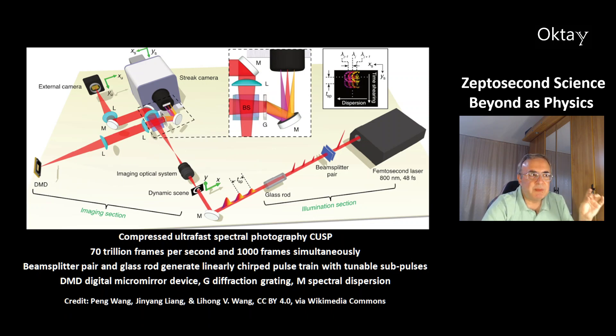This is CUSP compressed ultra-fast spectral photography. It is able to make 70 trillion frames per second and 1000 frames simultaneously. The important parts are this beam splitter pair and this glass rod. They generate linearly chirped pulse train with tunable sub pulses. This is the digital micromirror device. Here G from this part is a diffraction grating. And M is a spectral dispersion of the light.